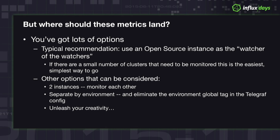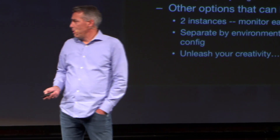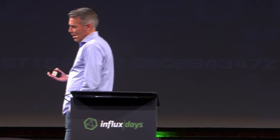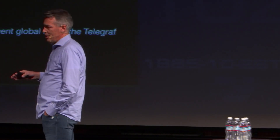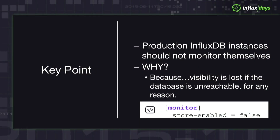You need something watching the thing that's watching all your things. If you only have two instances, you can have them watch each other. However you want to route the metrics is only limited by your creativity. The key point is: you should never have a production instance of the database monitor itself. The database does log its own stats by default into the underscore internal database, but if there's a problem and it goes down, you lose all visibility. Best practice: number one, for production deployments turn this off in the config; number two, set up a Telegraph agent with those plugins and put the stats somewhere you can see them.